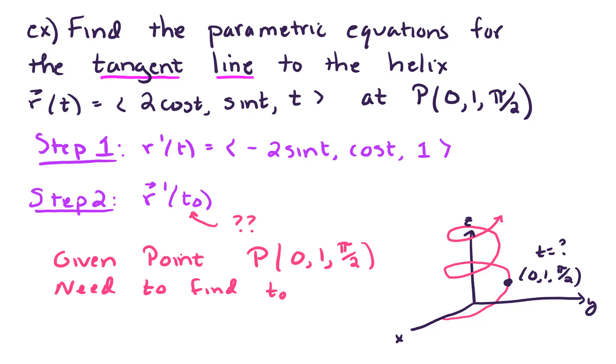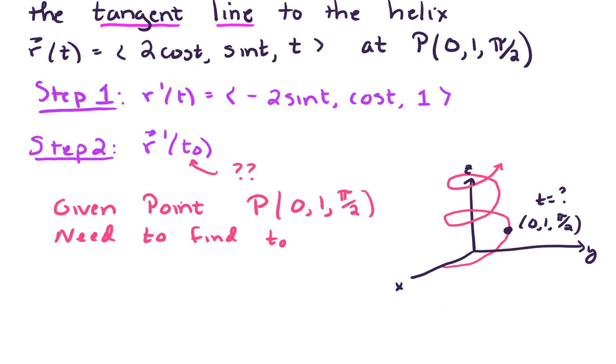Alright, so there's a couple of ways we could figure this out. Now we know that this point lies on the curve r of t. So let's set 2 sine of t equal to 0. We'll set sine of t equal to 1. And then we'll set t equal to pi over 2. Well, already we pretty much have our answer. We know that t must equal pi over 2.